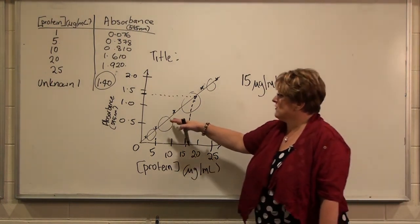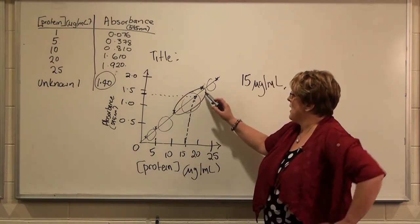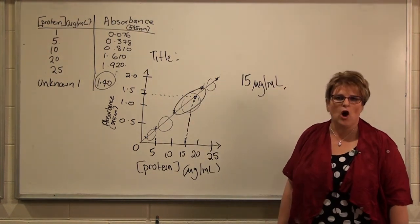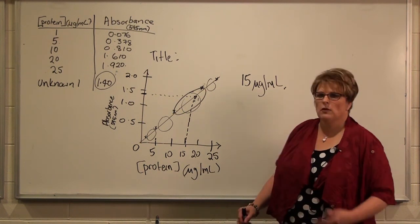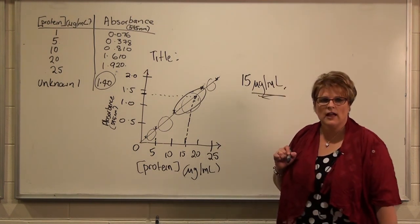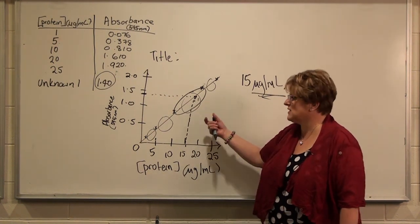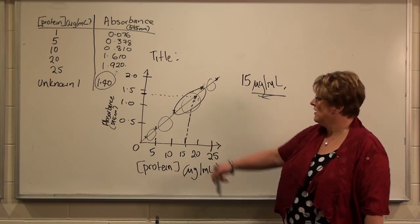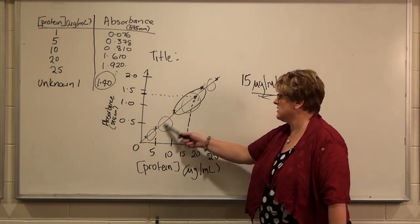These sorts of graphs allow us to use information about what happens between data points and use that experimentally — a very common technique in biology. When constructing graphs, it's not just about getting the numbers right. It's also about presenting the graph in a conventional way so other scientists can critique the validity of your results. That's why it's important to have a title, axis labels, and clear experimental data points.